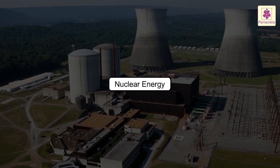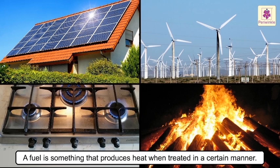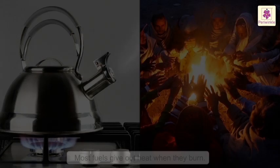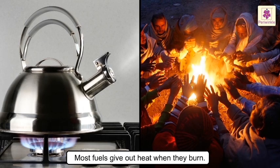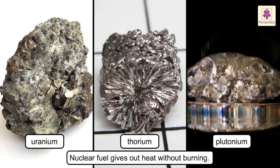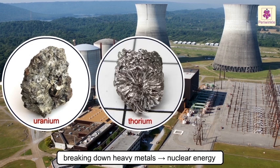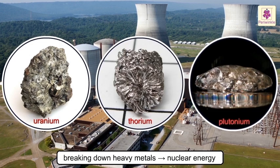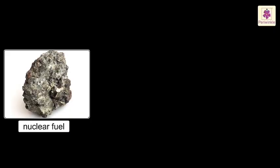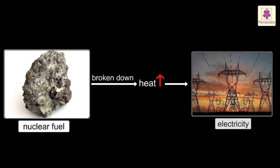Nuclear energy. A fuel is something that produces heat when treated in a certain manner. Most fuels give out heat when they burn. However, nuclear fuel gives out heat without burning. In a nuclear power plant, the nuclear energy is obtained by breaking down heavy metals like uranium, thorium, plutonium, etc. When a nuclear fuel is broken down, it generates heat. This heat can be used to generate electricity.